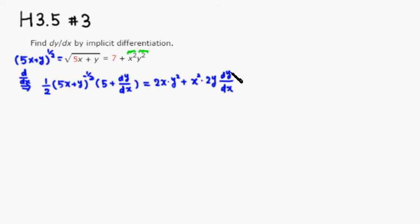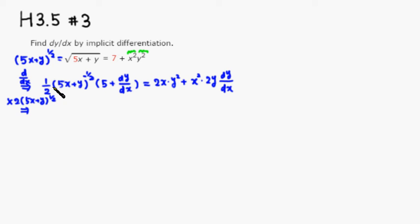Since we have (5x + y) to the negative 1/2 power with a 1/2 coefficient, I'm going to multiply both sides by 2(5x + y)^(1/2). The 1/2 and negative 1/2 powers cancel out, leaving just 5 plus dy/dx on the left-hand side.